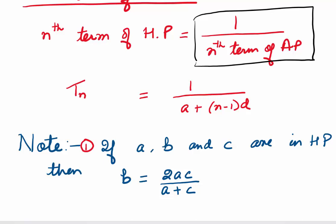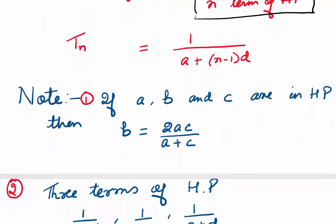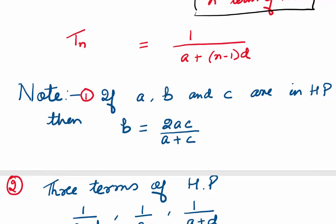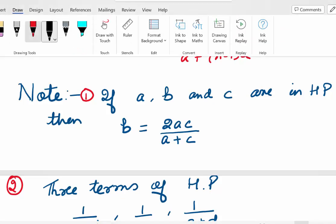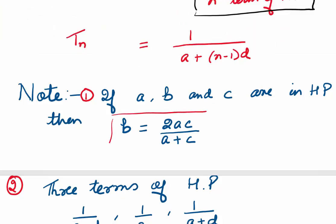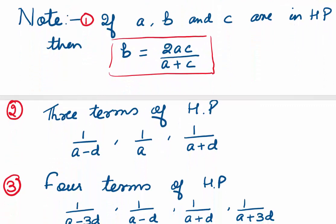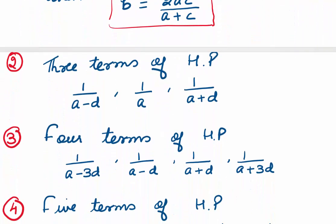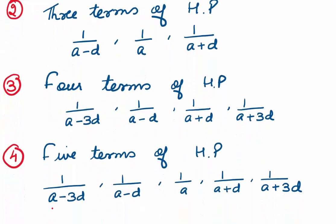A few things to note. If you are given three terms in HP — say a, b, and c — then the middle term b is 2ac/(a+c). So b = 2ac/(a+c). Now, whenever we are asked to take three consecutive terms of an HP, we take them as 1/(a-d), 1/a, and 1/(a+d).